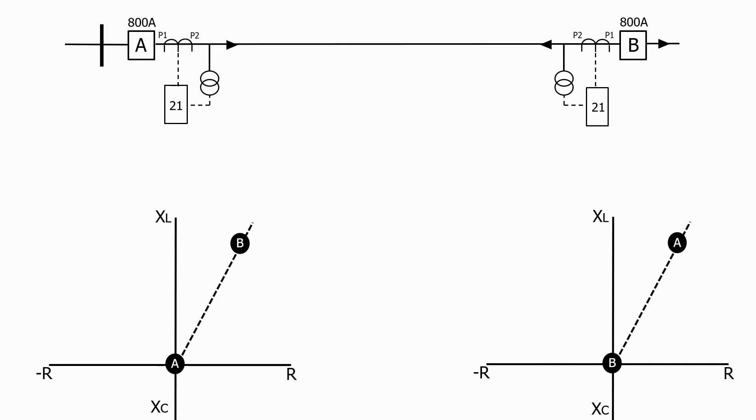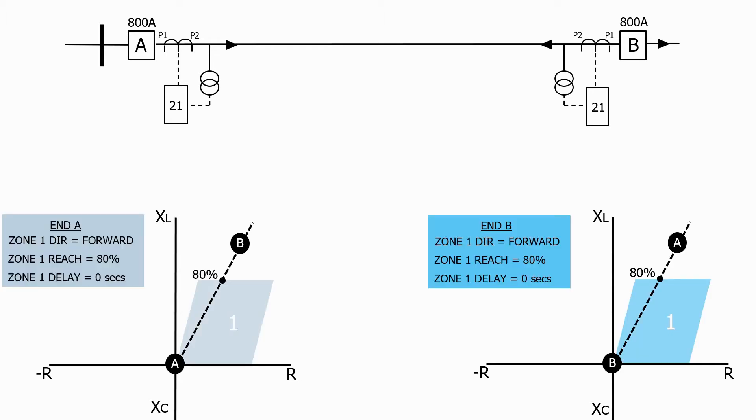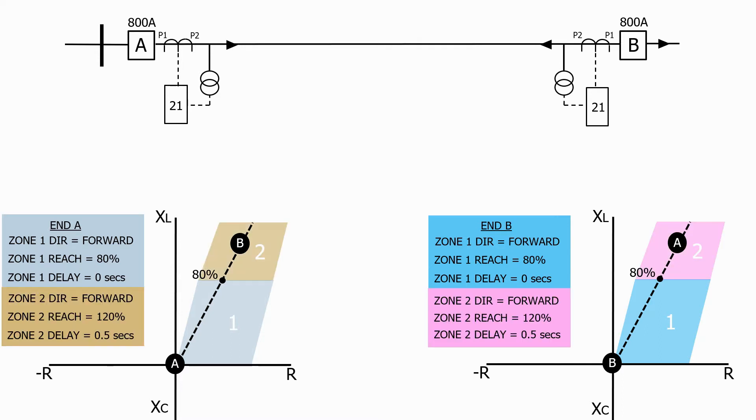Here we have our two ended feeder from before with an impedance relay on both ends. As before we set the zone 1 reach to 80% for both relays and made them instantaneous, and the zone 2 reach to 120% and given them a small time delay.